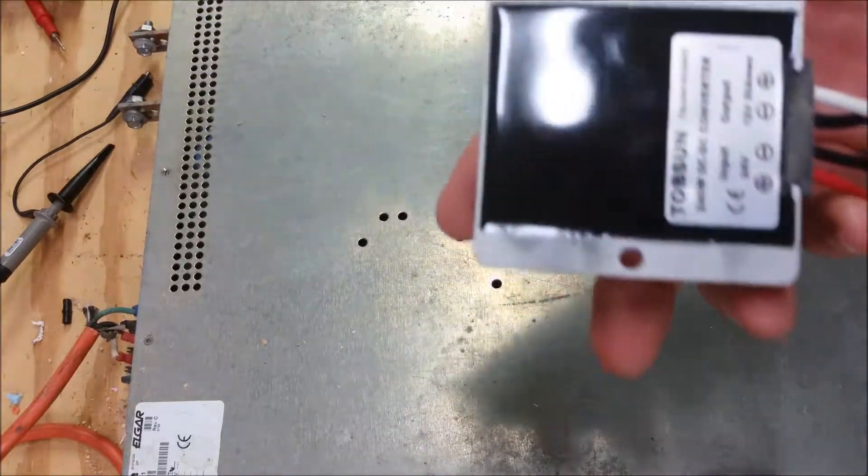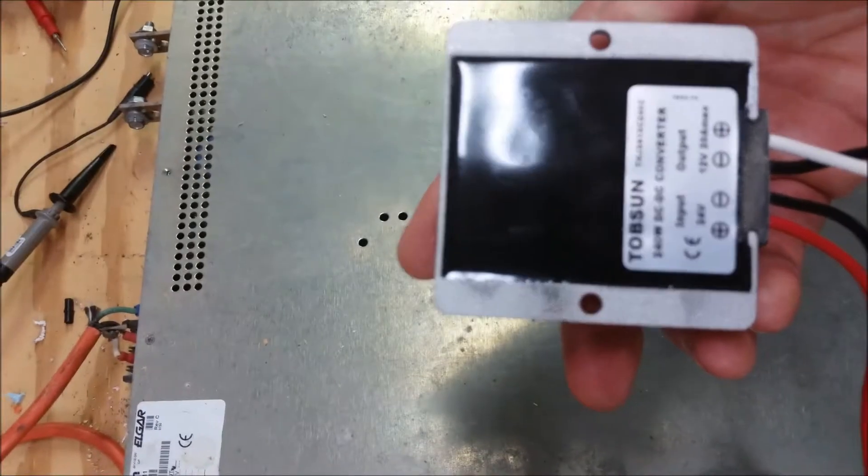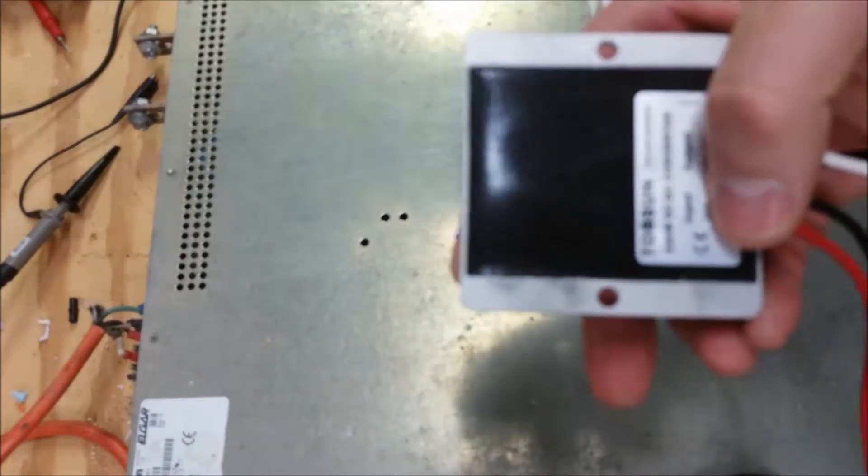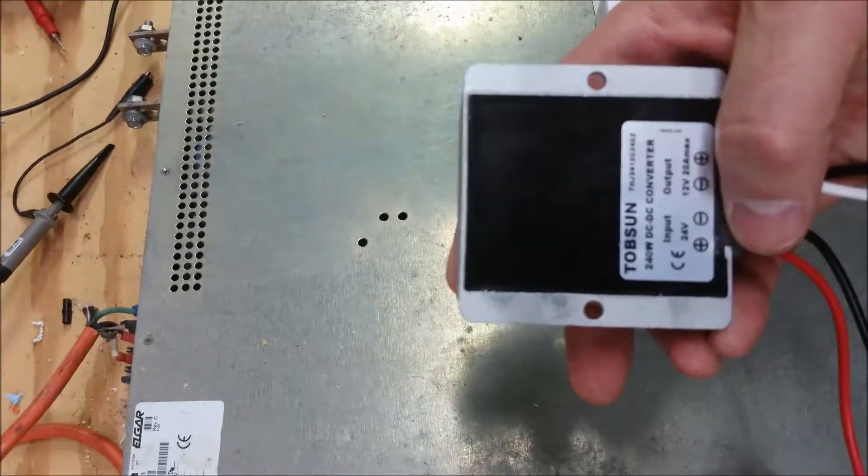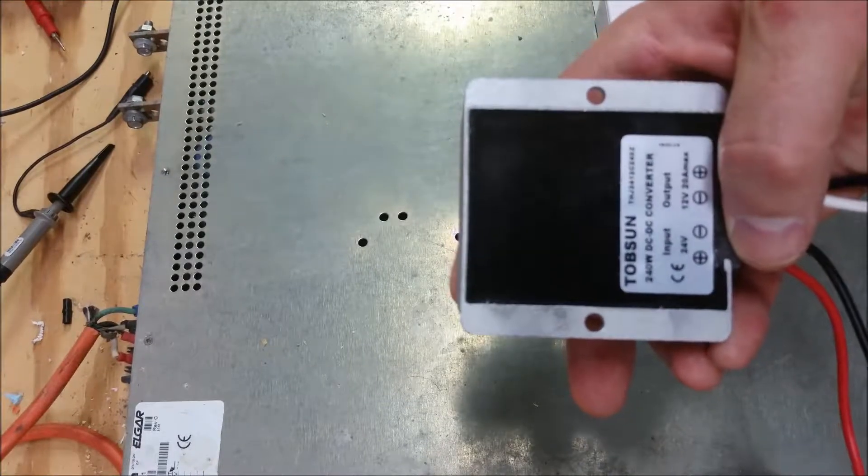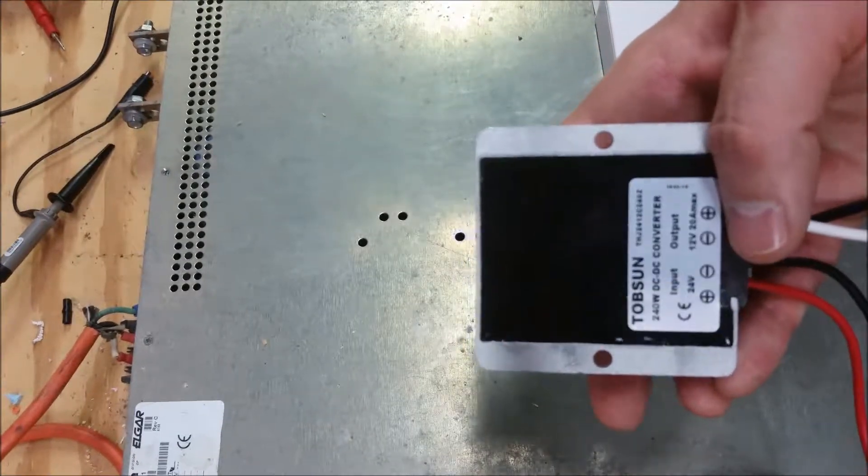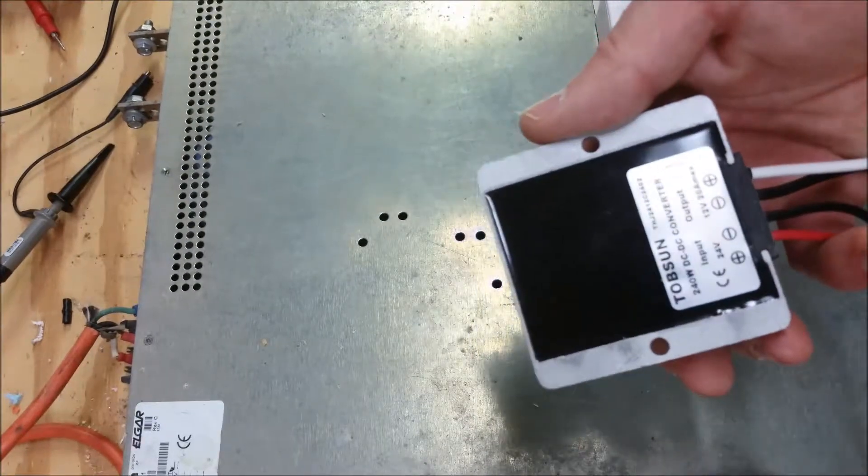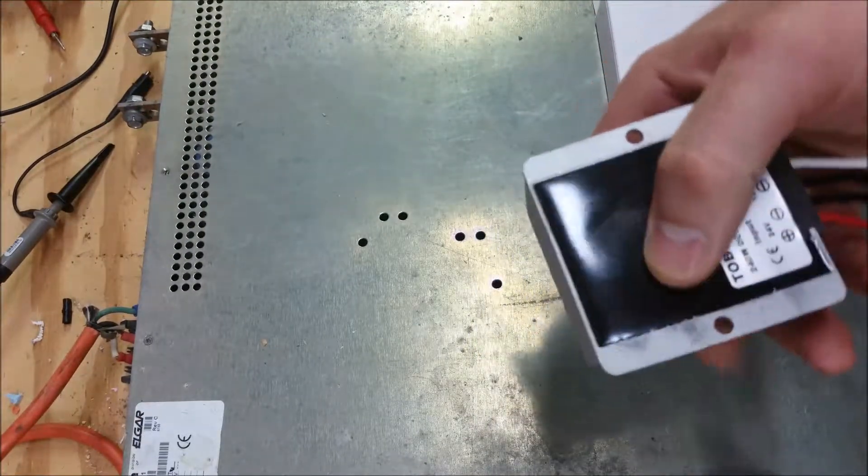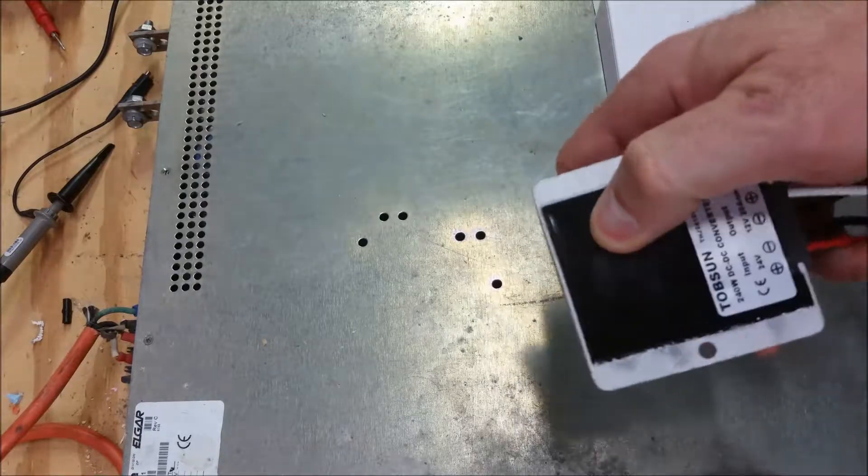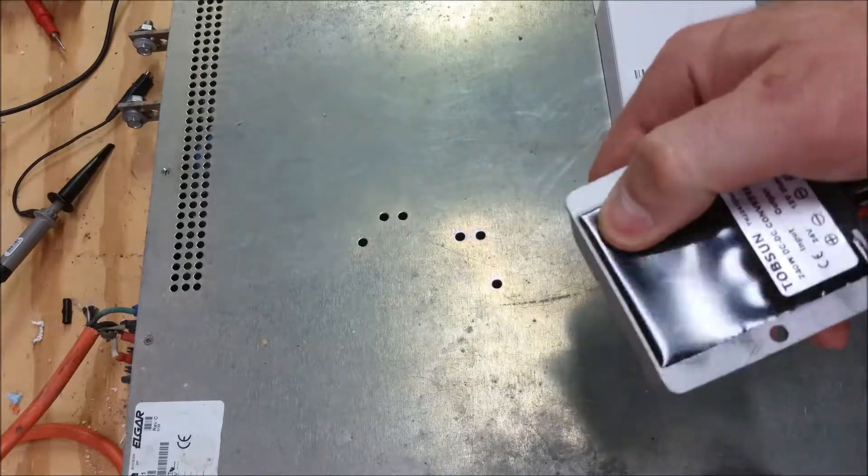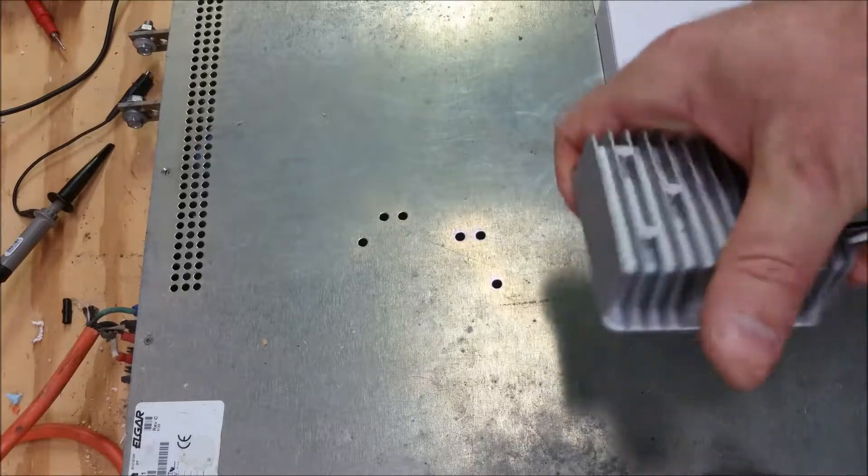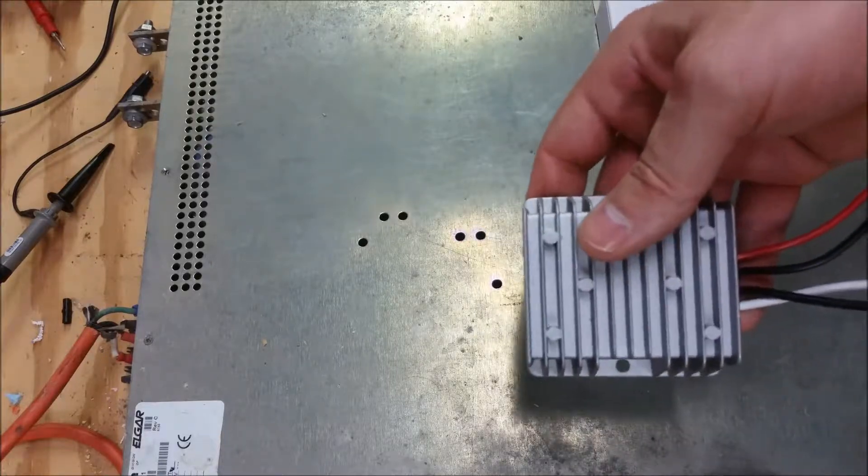It's rated from a nominal input of about 24 volts. It says you can go anywhere from 12 to 40 volts and your output is 12 volts at 20 amps max. It looks like it's sealed fairly decent, although this looks like a rubberized coating, it's not true potting material. It's supposed to be weatherized so it won't have any problems in the rain hopefully.